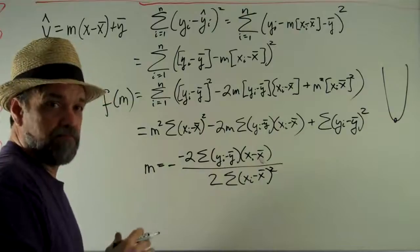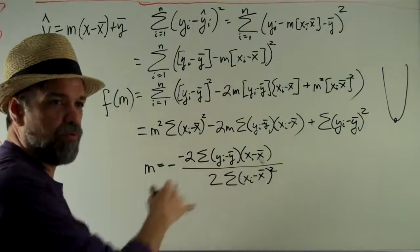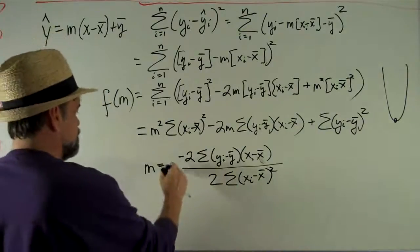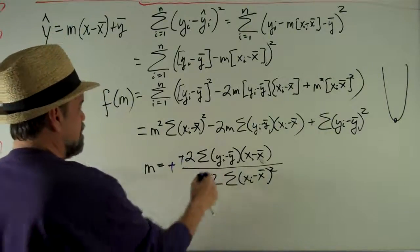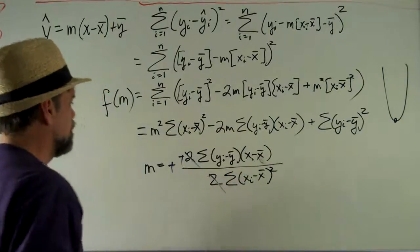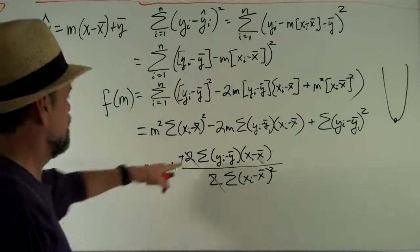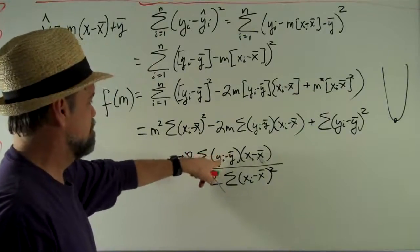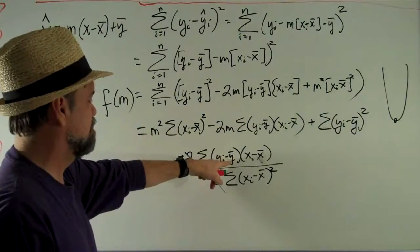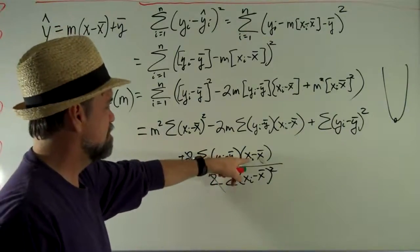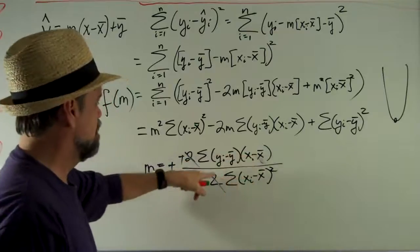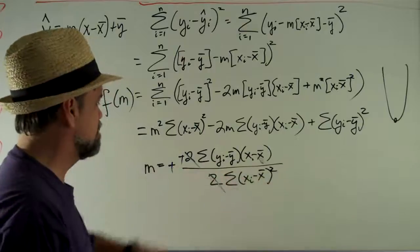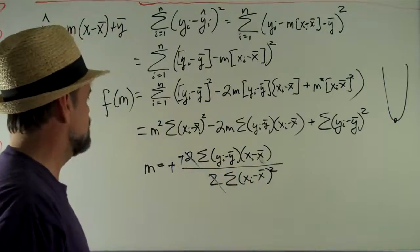Fortunately, I think I'm writing it consistently, so go by what I write, not what I say. Those cancel out, the twos cancel out, and there's my slope. That's not so bad. It's the sum of the distance from y to the mean of y times the distance from x to the mean of x, over the sum of the distance from x to the mean of x squared for all the x's. That's what our slope is going to be.